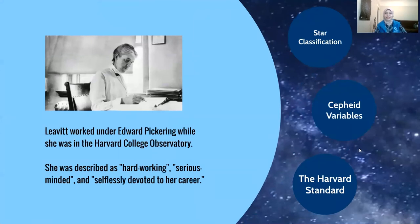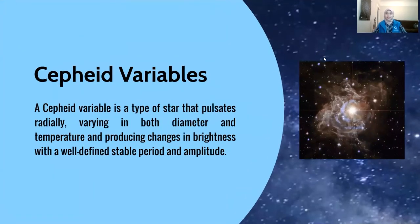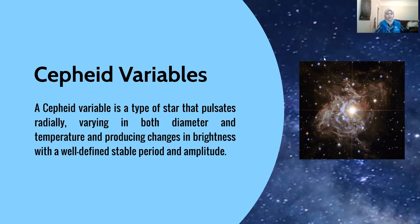Another project she worked on, and the one she is probably most known for, is her project on cepheid variables. She decided to look carefully into the relationship between luminosity and period in cepheid variables. A cepheid variable is a type of star that pulsates radially, varying in both diameter and temperature, producing changes in brightness with a well-defined stable period and amplitude — basically a star that pulsates and changes in brightness, sometimes bright, then dim, then bright again.